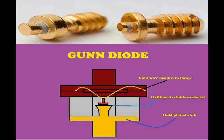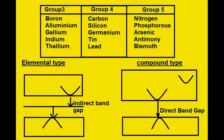Although the Gunn diode has no PN junctions, it is still called a diode because its electron transfer mechanism is similar to normal PN diode characteristics. That is the reason the suffix 'diode' is added to it.